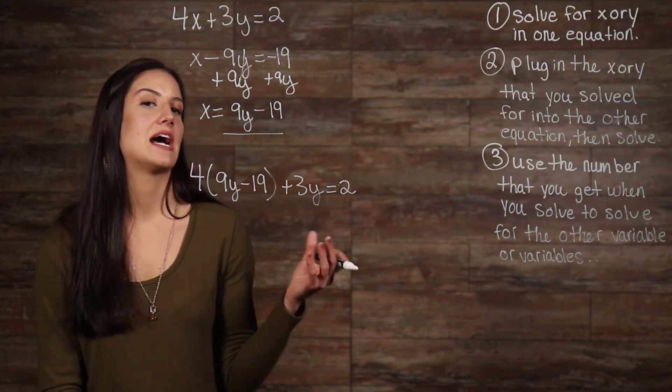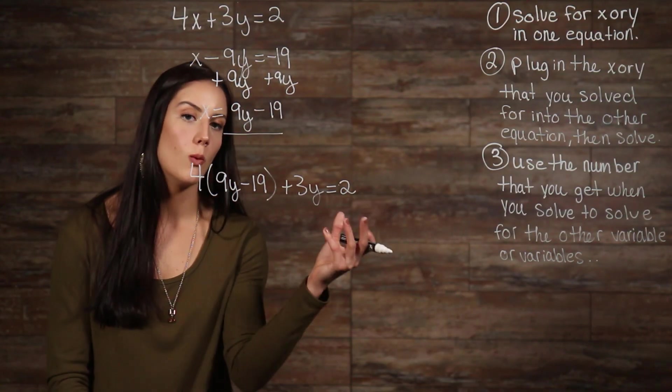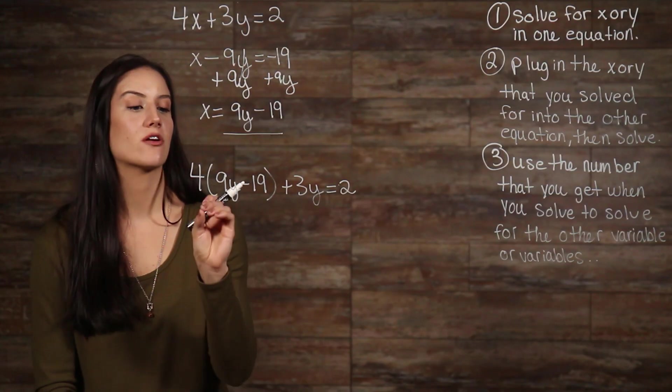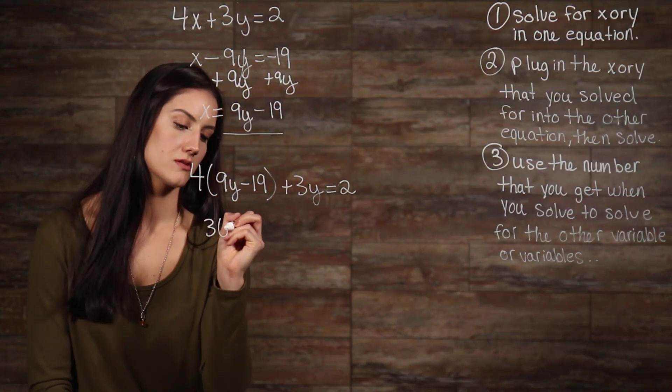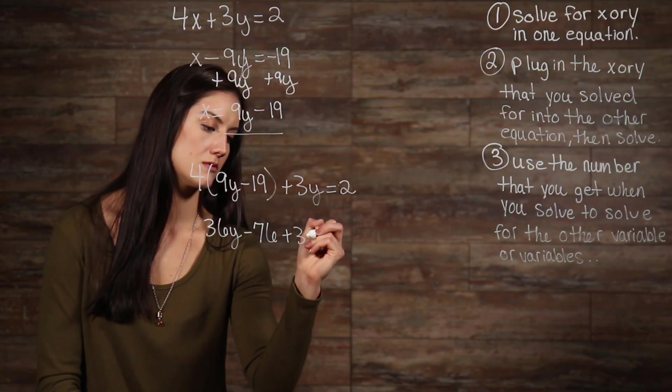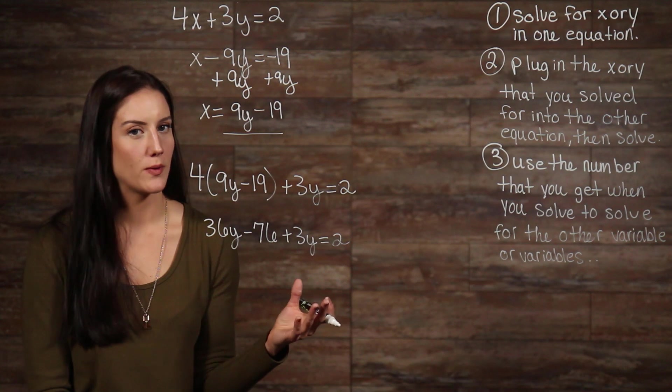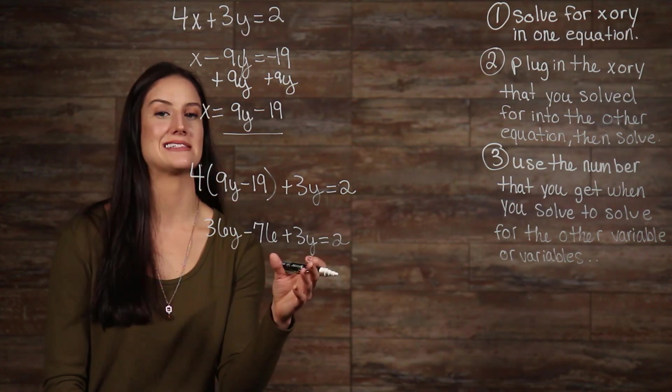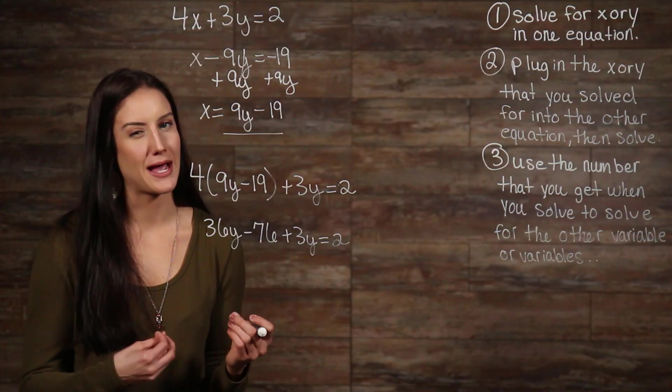Now that we have it down to one variable, we are able to solve for the value of that variable, so in this case y. Let's rewrite this by multiplying our 4 by everything inside our parentheses. Now we can add our 76 to both sides. You can do this multiple ways. If you wanted to add your y's together first, then do that. I'm just doing what is easier in my mind.